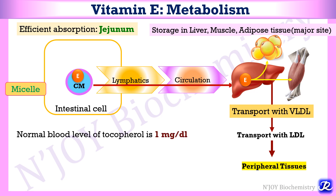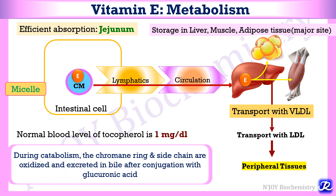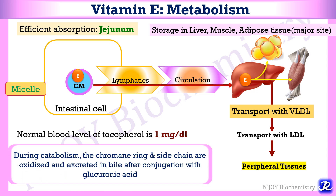The normal blood level of tocopherol is 1 mg per deciliter. During catabolism of vitamin E, the chromane ring and side chain are oxidized and excreted in the bile after conjugation with glucuronic acid.